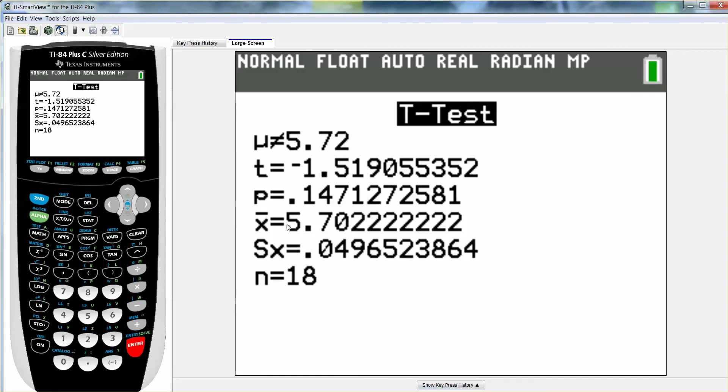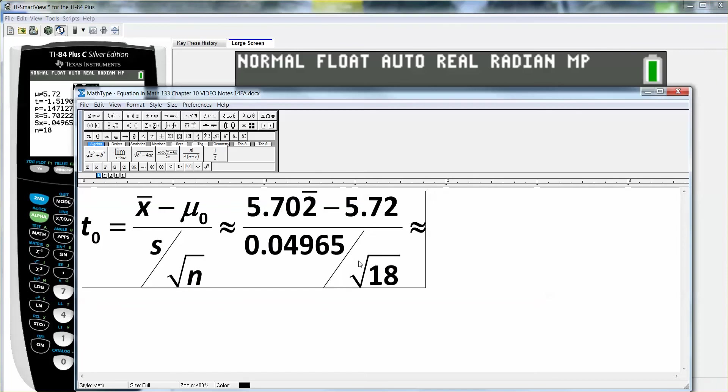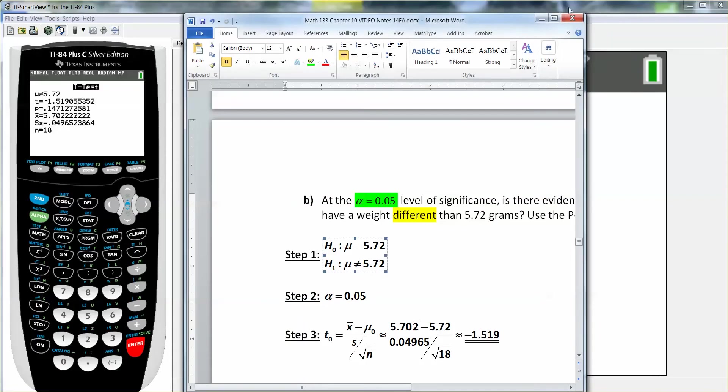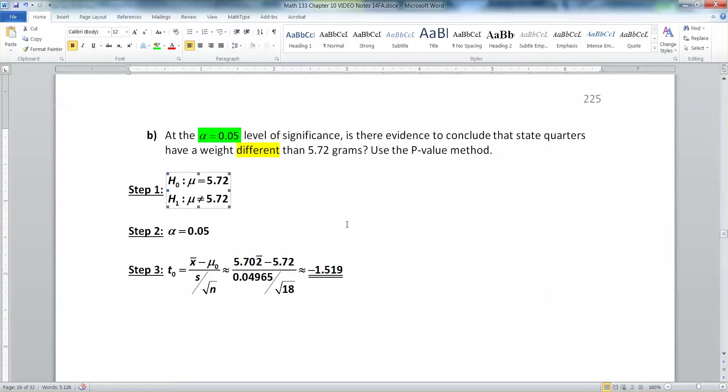And there you have it. And look, it gives you x bar 5.702. It gives you s 0.04965. And it gives you 18 for n. And it tells you up at the top that t0 t is negative 1.519. So negative 1.519. That's my t0 value. I'm going to need it later. So I'm going to underline it.